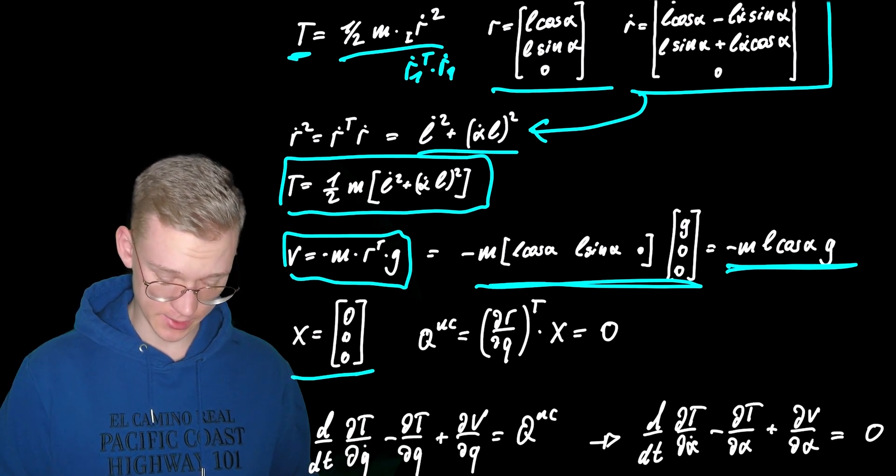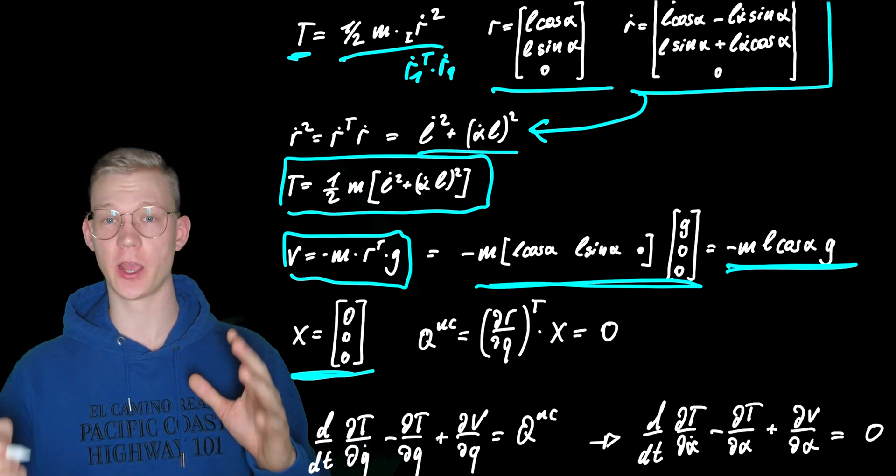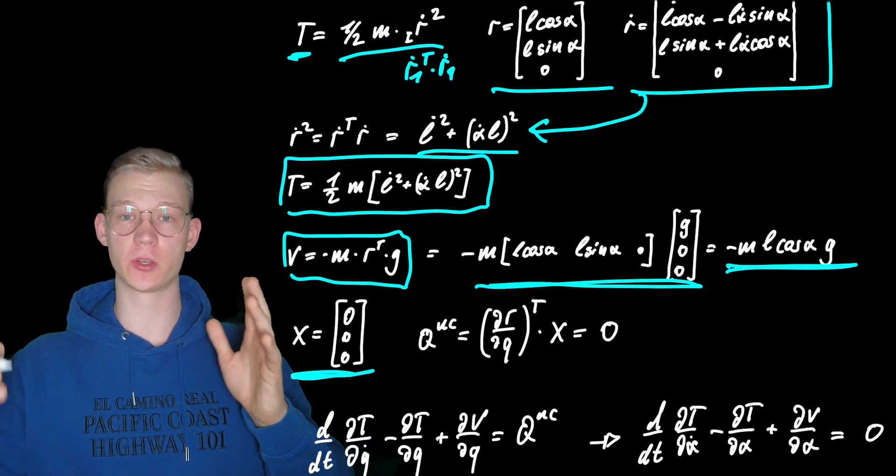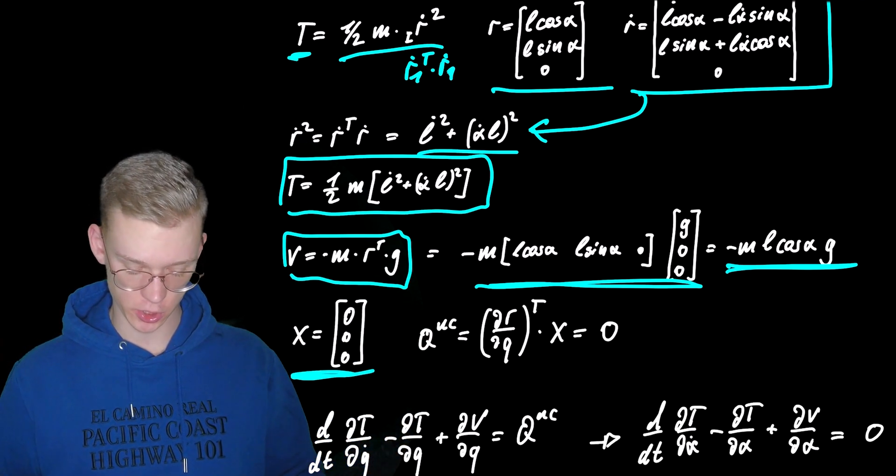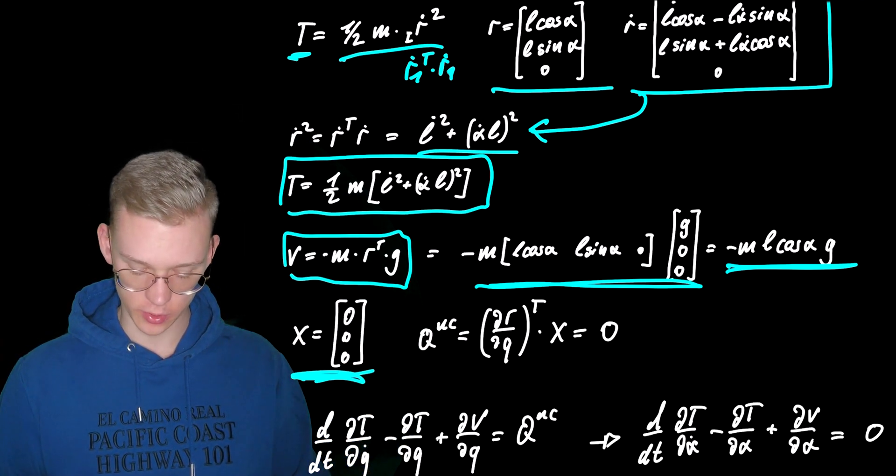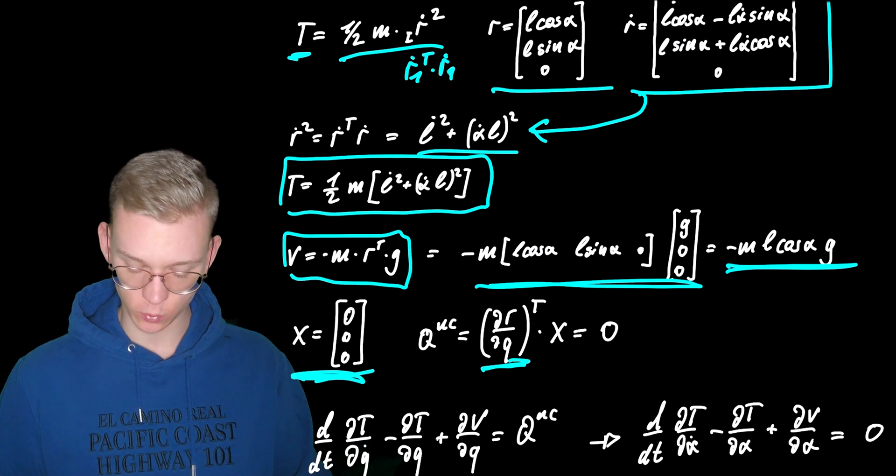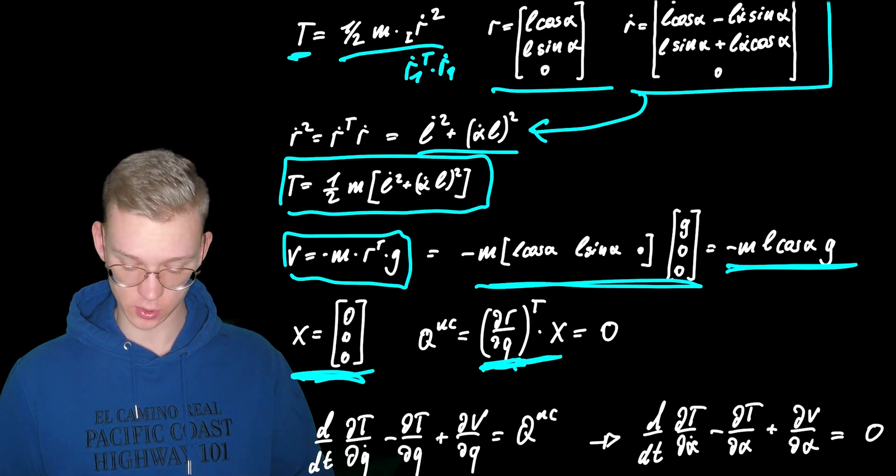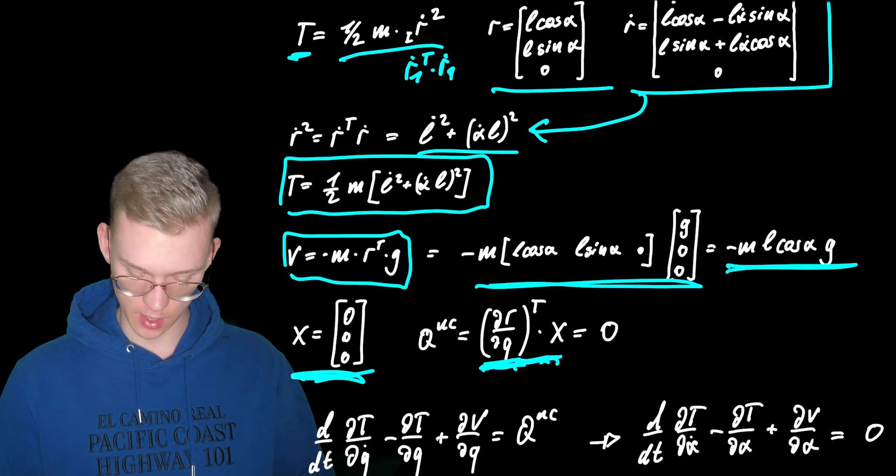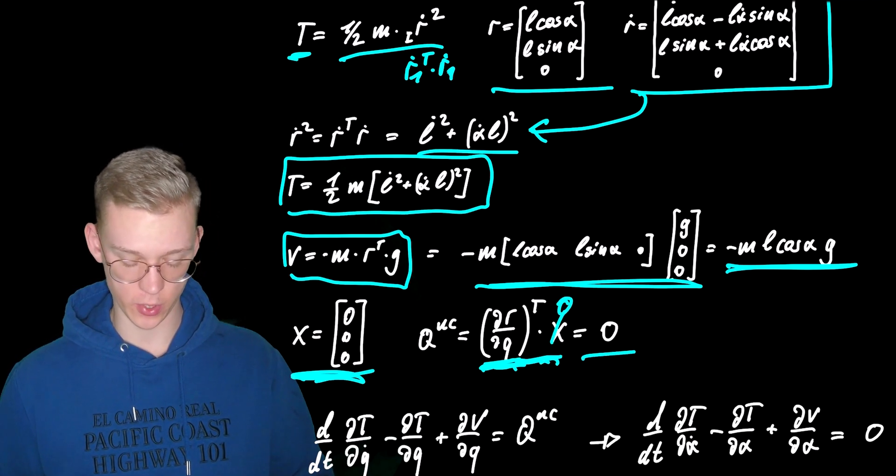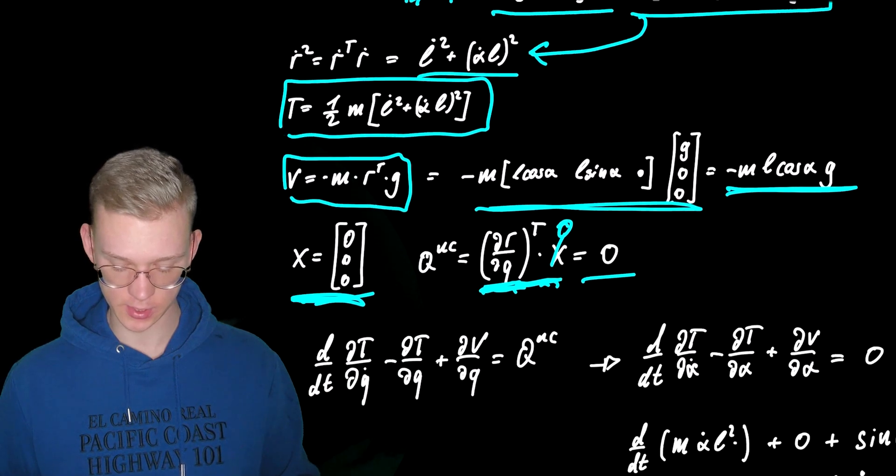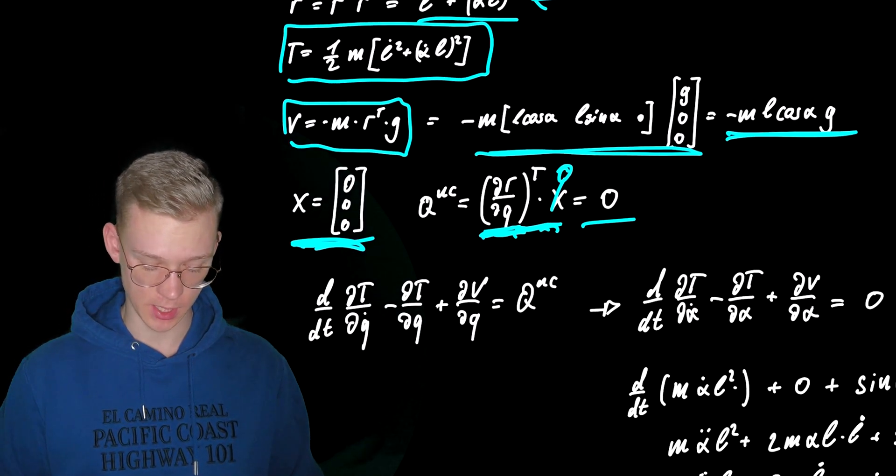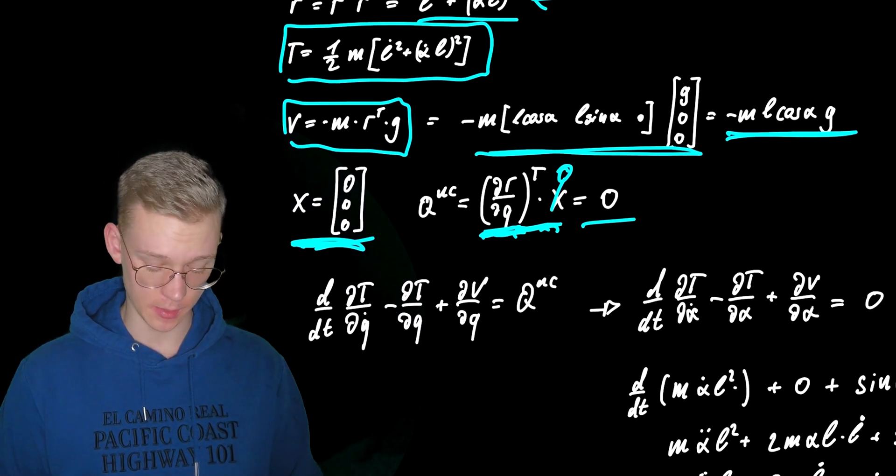We have zero forces that are acting on our system. Gravity is a force that can be transformed into the potential. So we have zero non-conservative forces that would be the projection into the space of generalized coordinates but we have zero so we have zero non-conservative forces and now we just have to do the same thing as we did multiple times before.